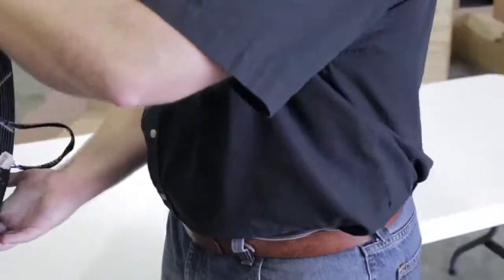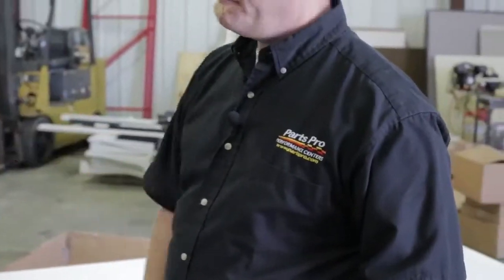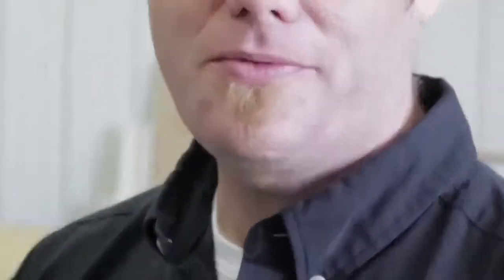Once you've got them on, you can position it on the radiator, use your pull ties to get it lined up, get it mounted on, and you're all done. We'll show you what it looks like when we're done.